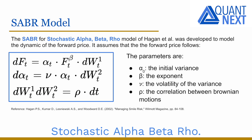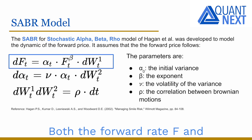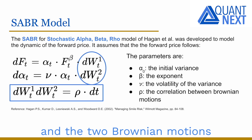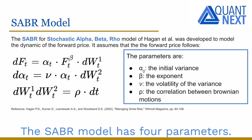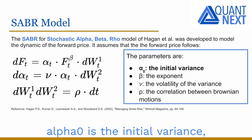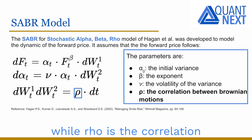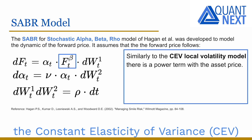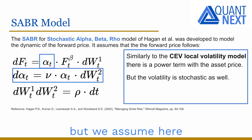SABR stands for Stochastic Alpha Beta Rho. It assumes that the forward price has the following dynamic. Both the forward rate F and its variance alpha are stochastic, and the two Brownian motions W1 and W2 are assumed to be correlated. The SABR model has four parameters: alpha zero is the initial variance, beta is the exponent, nu is the volatility of the variance, and rho is the correlation between the two Brownian motions. Similarly to the constant elasticity of variance (CEV) local volatility model, there is a power term in the asset price, but the volatility is stochastic as well.